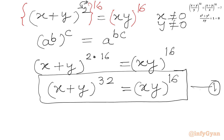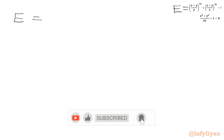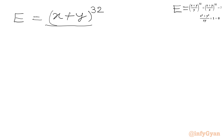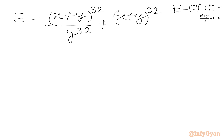Now let's write our expression E. We can see the numerator contains (x + y)^32. So E equals (x + y)^32 over y^32 plus (x + y)^32 over x^32.